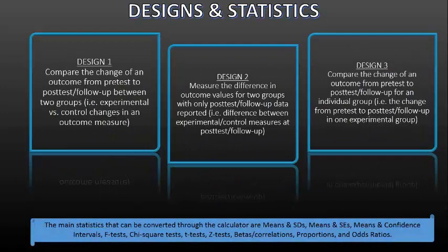Our software is going to cover a number of different designs and use a number of different statistics. It's mainly geared for experimental control study designs. You can use it for other study designs as well but it will be easiest and it's built to be used for this type of study design. Design one is the most ideal type of study design. It's going to compare the change of an outcome from pre-test to post-test and follow-up between two groups.